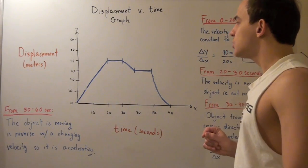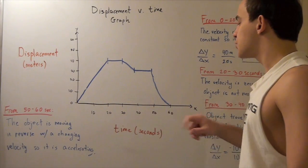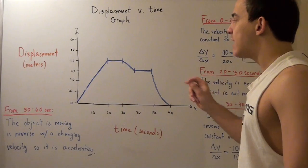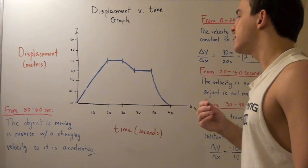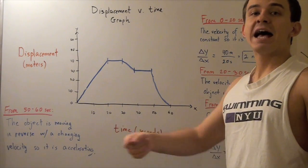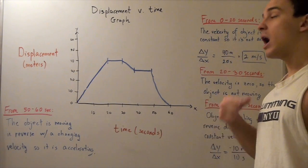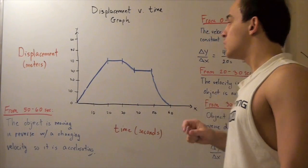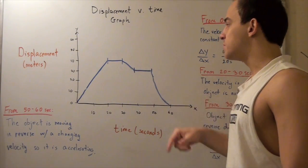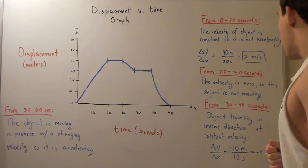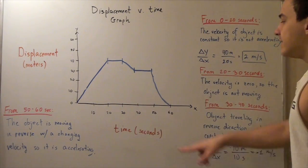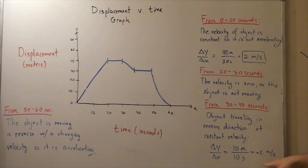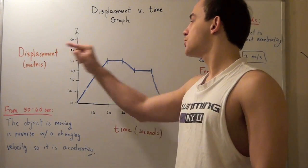Let's look at what happens from thirty to forty seconds. We have a constant slope again, but now it's pointing downward, meaning the direction of velocity has been reversed — our object is now traveling the other way. Solving for slope: change in y over change in x gives us negative ten meters over ten seconds, so our velocity is negative one meter per second. The magnitude is one meter per second in the reverse direction.